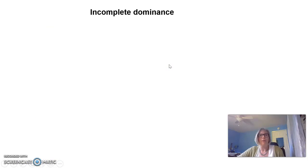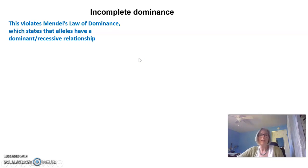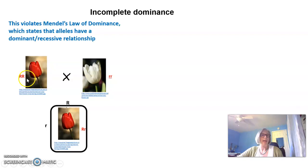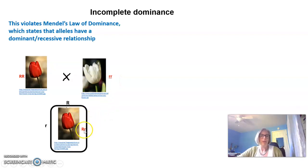The next example of an inheritance pattern that does not follow Mendel's laws is incomplete dominance. This violates Mendel's law of dominance, which states that alleles have a dominant-recessive relationship. In classic Mendelian inheritance, if you cross a homozygous dominant red flower with a homozygous recessive white flower, 100 percent of the next generation would be heterozygous with the dominant phenotype.